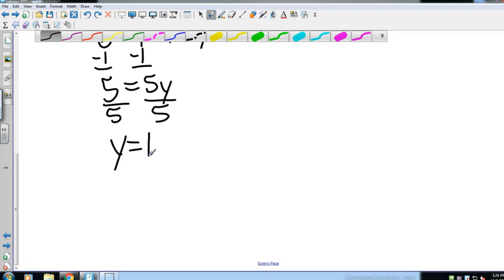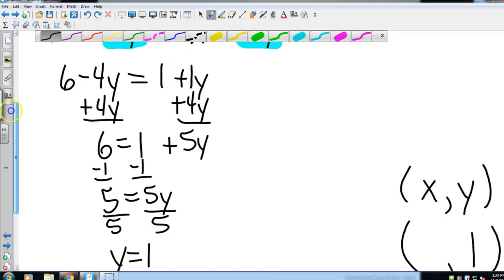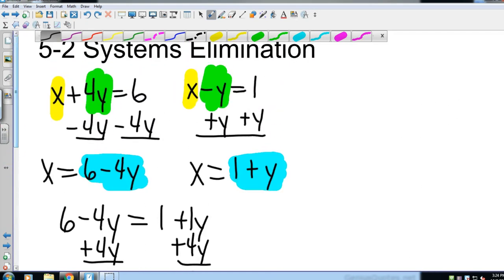And so in our coordinate, remember we're going to have an x value and a y value in our solution. So we have found the y value in our solution, and that is 1. Now the question is, how do I find my x value? Well, I go all the way back to the original equation and I pick one of them. Doesn't matter.